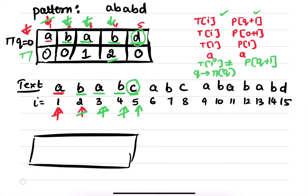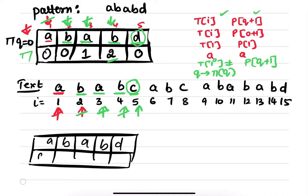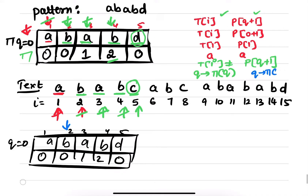Make a new prefix table: a, b, a, b, d with values 0, 0, 1, 2, 0. Q is 0, 1, 2, 3, 4, and 5. Now q will come here — that is pi of q. So q will go to pi of 2, which is here. Now check: is C matching with A? No, it's not matching. Therefore, q will go to pi of q. Here pi of q is 0, so let me draw a new prefix table.